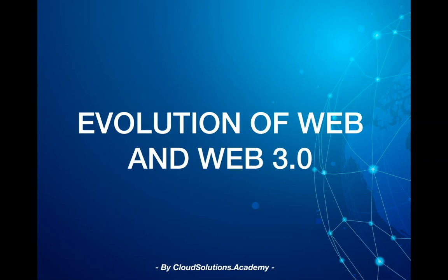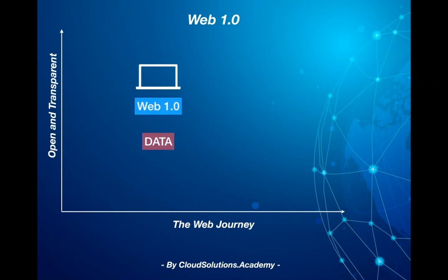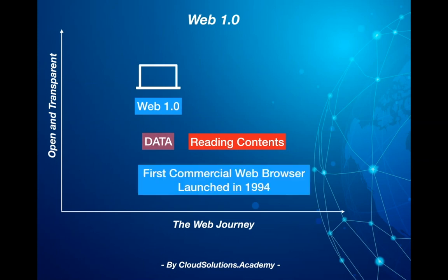The first version of web, web 1.0 as we call it, was all about providing data where users were consuming the data as is. I still remember my first interaction with the web was with a terminal where we used to type the URL and get the text of the HTML page. In fact the first commercial browser Netscape Navigator was released in 1994, which started making the web more consumable.